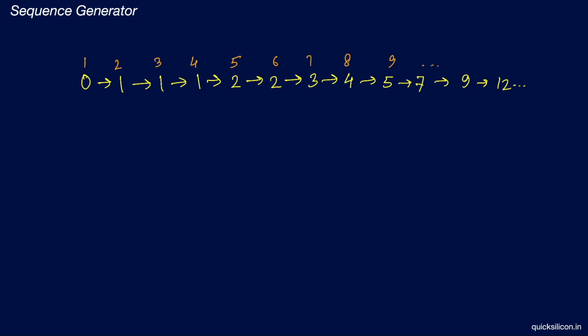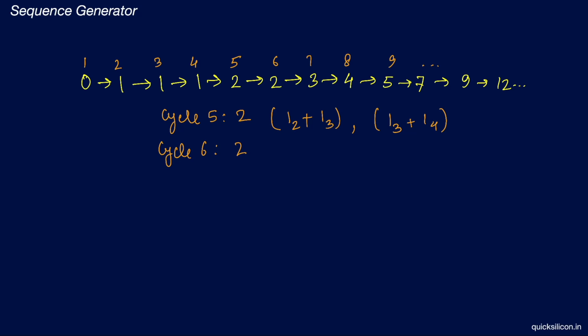We'll start from cycle 5. On cycle 5 the output is 2 — we can form this by either using cycles 4 and 3, or cycles 2 and 3. We can get 2 by adding the number on cycle 2 (which is 1) plus the number on cycle 3 (which is also 1). We can also generate it using cycle 3 plus cycle 4. On cycle 6 the output is again 2, formed by adding cycle 3 plus cycle 4. So on cycle 6 we used information from cycles 3 and 4, going up to 3 cycles back.